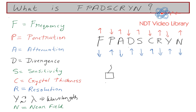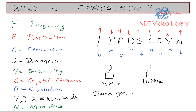Let's take an example. Consider two transducers: one at 5 megahertz and the other at 10 megahertz. The question is, which of those two probes will sound penetrate deeper? 5 megahertz is a lower frequency compared to 10 megahertz. Looking at FPATS CRINE, lower frequency gives more penetration. So sound will go deeper at the lower frequency — the answer is 5 megahertz.